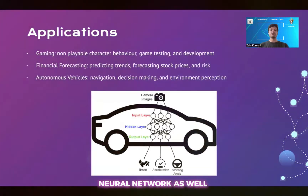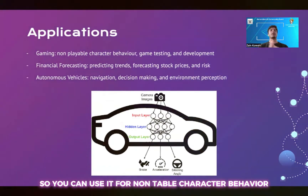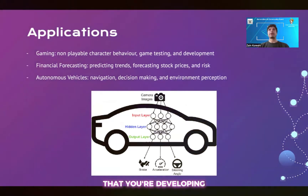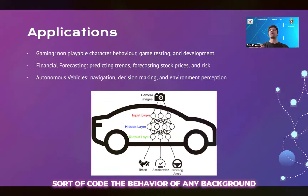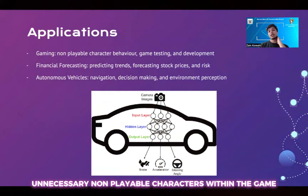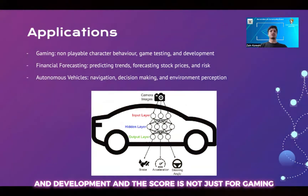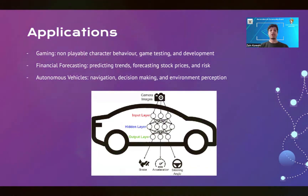You can also use neural networks in gaming — for non-playable character behavior. Say you have a main character in a game you're developing; you can use neural networks to code the behavior of background, non-playable characters within the game. You can also use neural networks for testing and development, and this applies not just to gaming but to other applications as well.